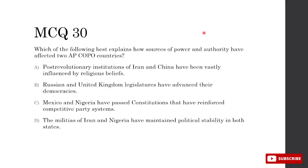Which best explains how sources of power and authority have affected two AP course countries? A — post-revolutionary institutions of Iran and China vastly influenced by religious beliefs: China has not been influenced by religion. B — Russian and UK legislators have advanced their democracies: Russia has taken a step back in the past 30 years. C — Mexico and Nigeria have passed constitutions reinforcing competitive party systems: true and a big part of their democratization. D — militias of Iran and Nigeria have maintained political stability: Nigeria is no longer dominated by the military, and Iran is not a military regime. So C is correct.